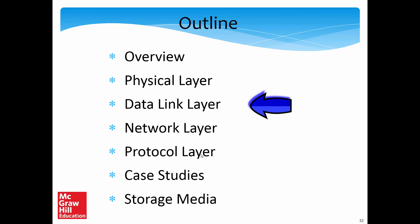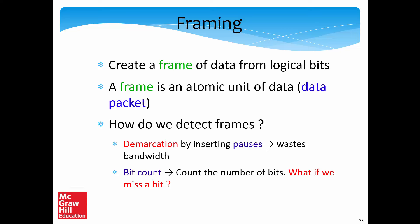Let us now take a look at the data link layer, which talks about sending a group of bits from the sender to the receiver. What we have achieved up till now is that from a given sender to a given receiver, we have formulated some methods to transfer bits. Clock recovery, synchronization, and the number of transitions have all been important factors, but these concerns are only limited to the physical layer. In the data link layer, we are more concerned with sending a big block of data from the sender to the receiver. This big block of data is known as a frame, which is a set of logical bits.